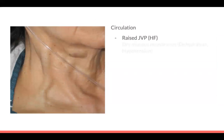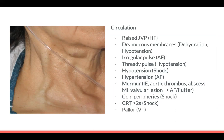Reduced air entry and tachypnoea — PE is another one that can often go missed because patients are just tachycardic. Moving on to circulation: either they've got hypotension and shock with low blood pressure and high heart rate, or they might be hypertensive, particularly in atrial fibrillation. If they've got a new murmur, it could mean infective endocarditis, a thrombus, or an aortic root abscess.